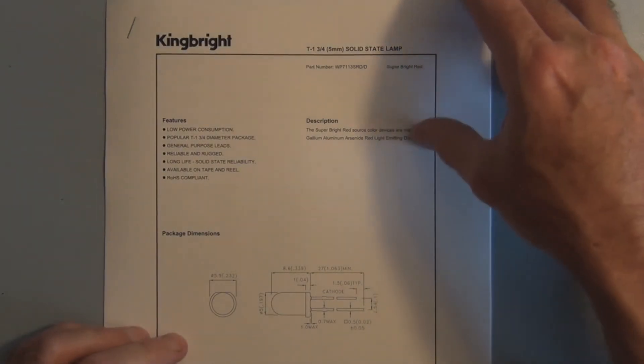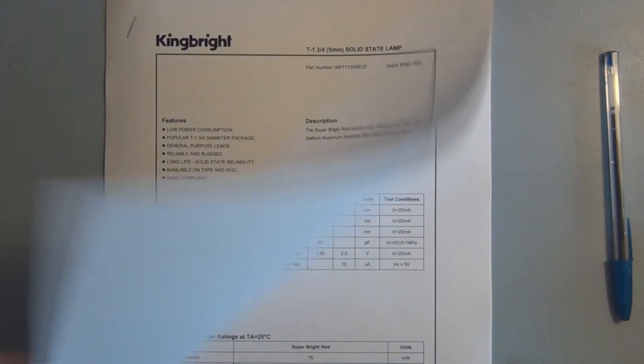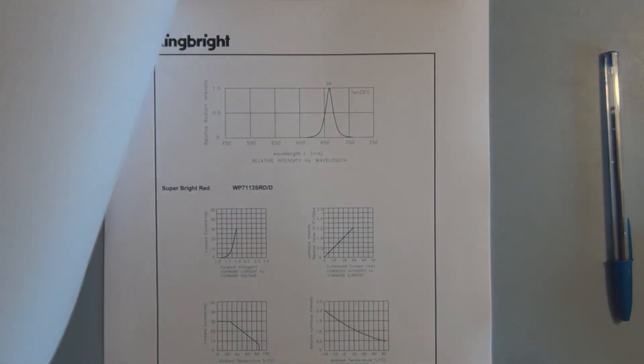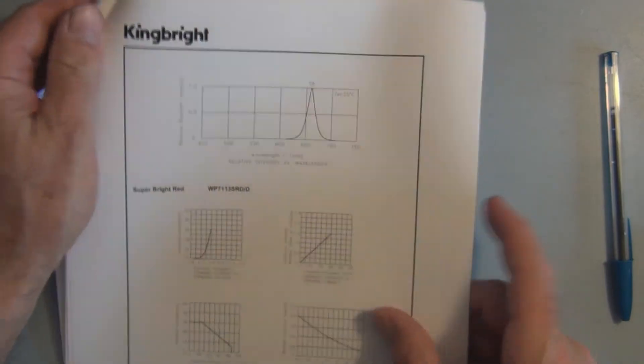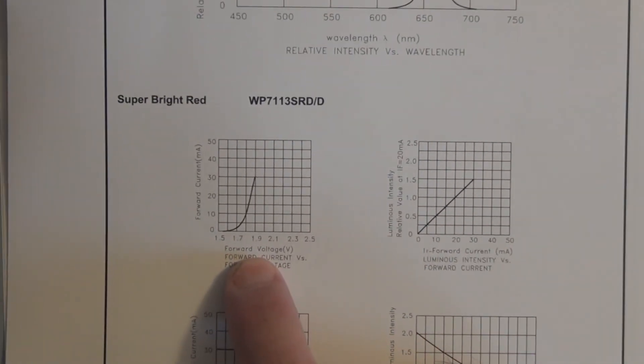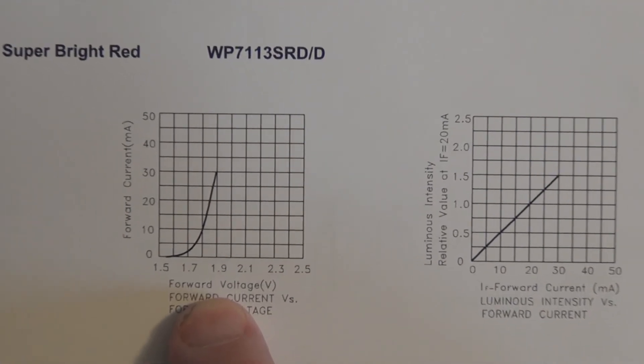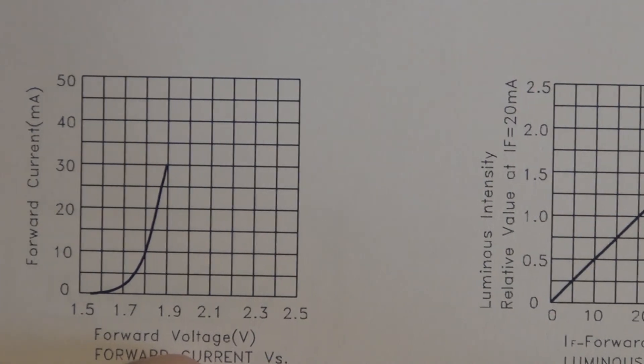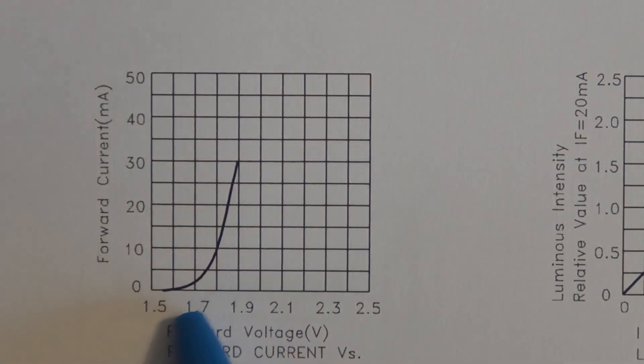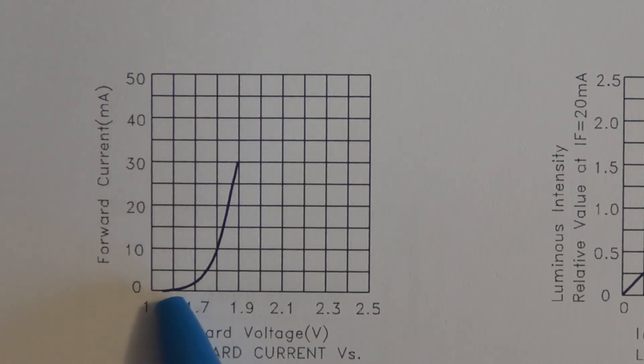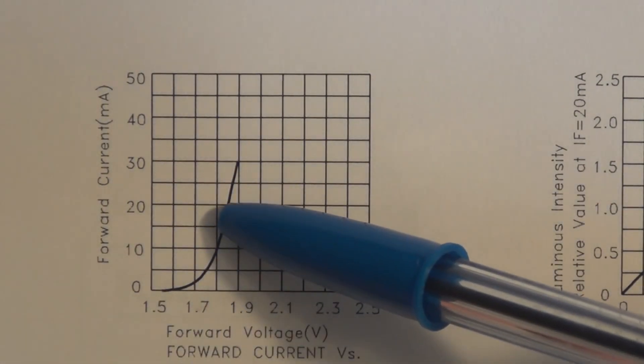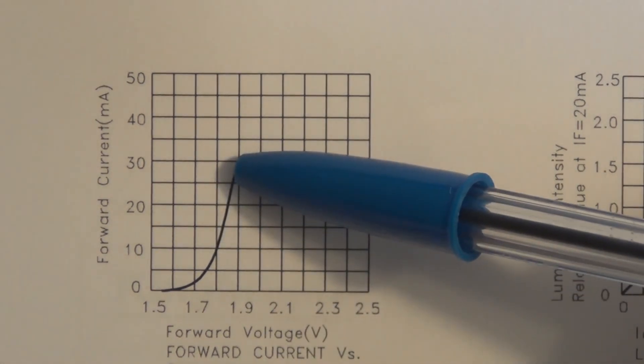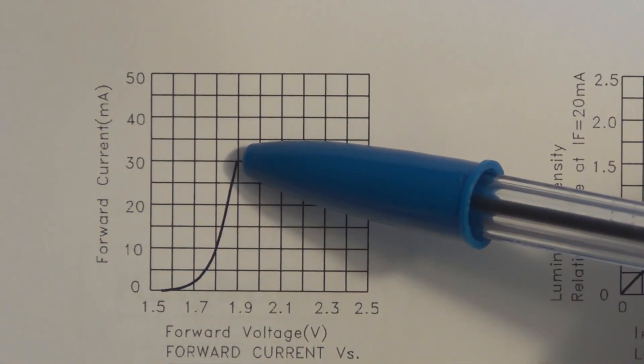Now here is a datasheet for a typical LED, and if we look in here in electrical characteristics, we can see here the current flow versus the voltage across the LED. And you can see that it just starts to conduct after 1.5 volts, and then as you increase the voltage from there, the current through the LED really starts to take off. And that's why you need that current limiting resistor.